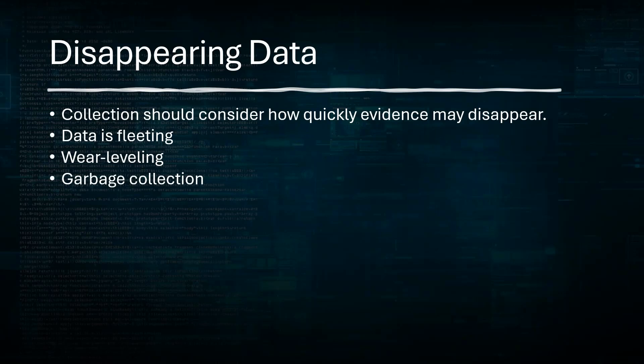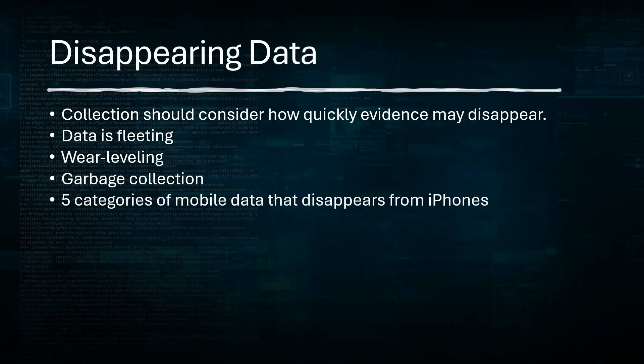This constant movement of data makes it more difficult to recover data that's been marked for deletion, because that marked data can quickly become overwritten. There's also something called garbage collection on a cell phone. This process reclaims memory that is no longer needed by separating valid data from invalid data and physically erasing that invalid data from the memory cells, freeing up space for new data. When you mark something to be deleted, the phone considers it invalid data, communicates that internally, and in conjunction with wear leveling, uses that space for new data.